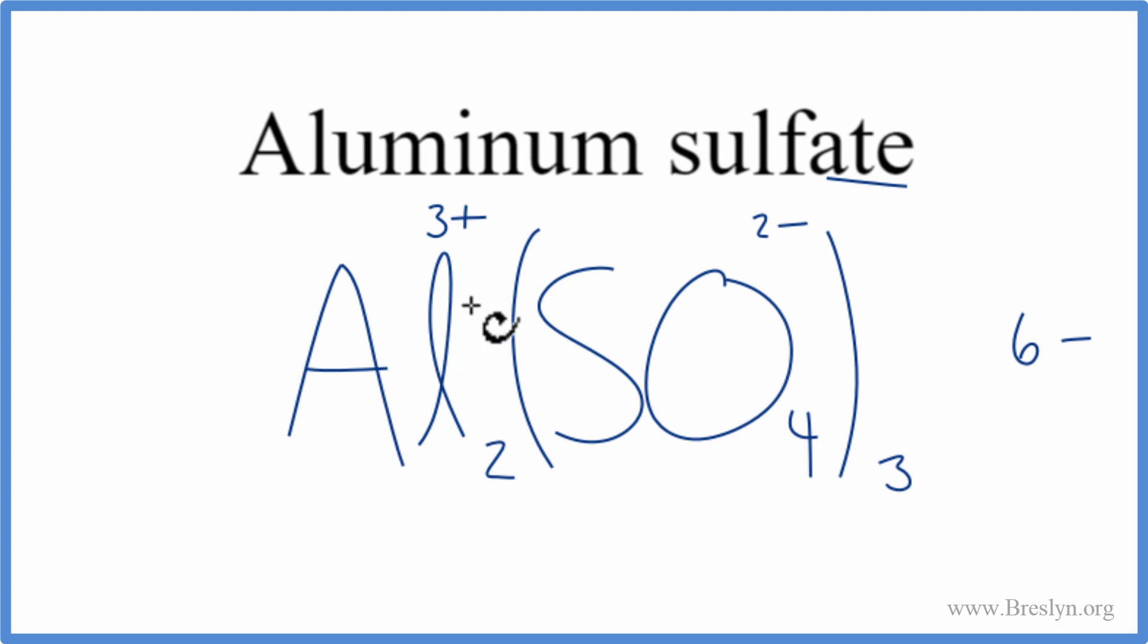And then two aluminum atoms, each one's 3 plus, 2 times 3 plus, that's 6 plus. So 6 plus and 6 minus, that adds up to zero, gives us a net charge of zero. This is the correct formula for aluminum sulfate.